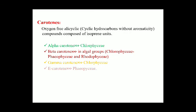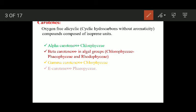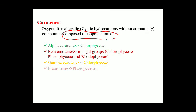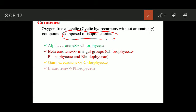Now the carotenes. Carotenes are oxygen-free alicyclic compounds composed of isoprene units, also known as 2-methyl-1,3-butadiene units. Xanthophylls, by contrast, are the oxygenated derivatives of carotenes — this is the main difference between xanthophylls and carotenes. While xanthophylls are oxygenated derivatives of carotenes, carotenes are oxygen-free alicyclic compounds constituted of many isoprene units.